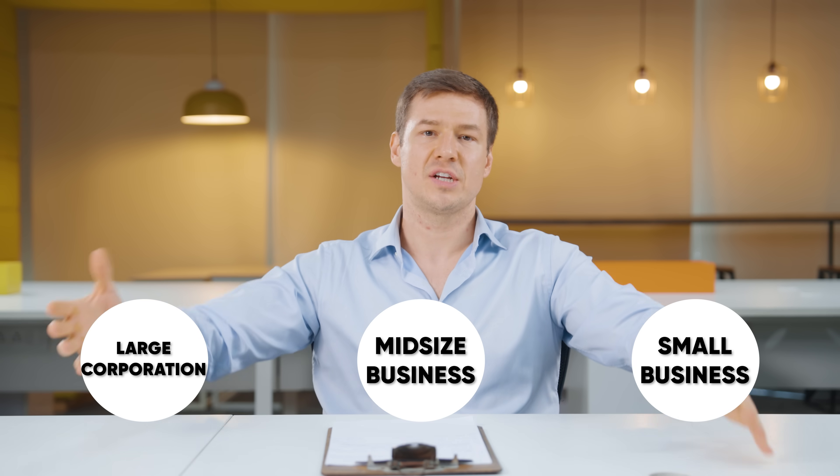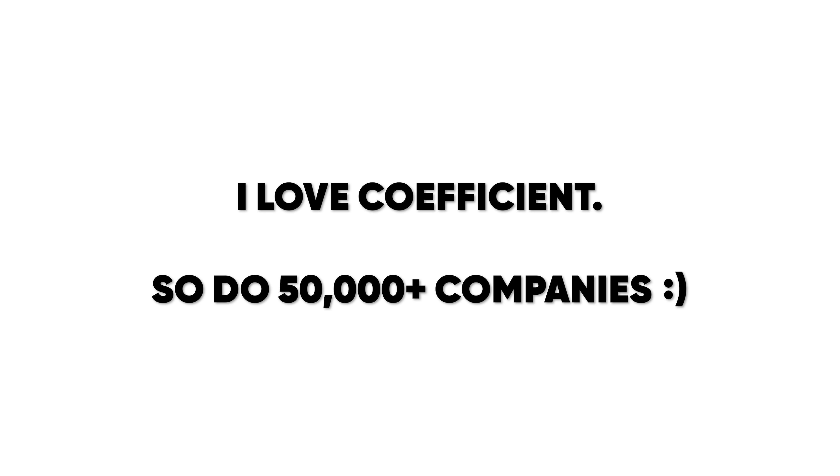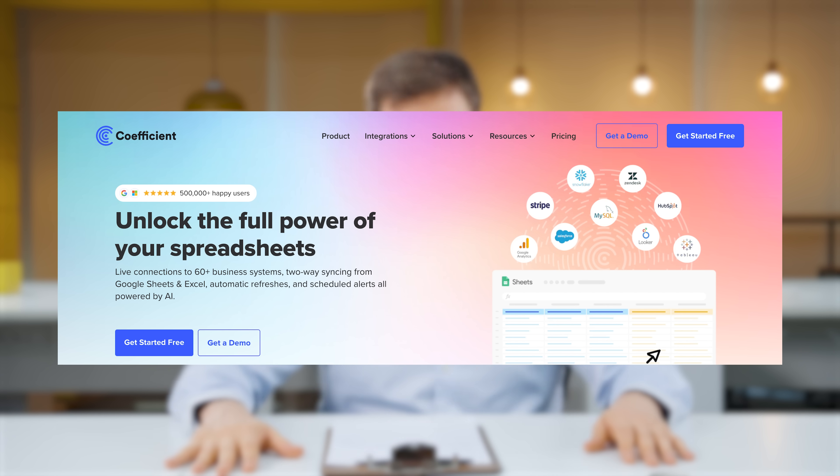Number eight, they serve companies just like you — whether you're a small business, a medium-sized business, or a large corporation. Number nine, I'm not the only one who loves Coefficient. Already 50,000 companies use Coefficient today — that's a huge number. It's so important to use the best software for your business because you grow so much faster. We talk to many companies and work with very few, so by the time a tool makes it on my channel, it's something incredible that will really help your business.